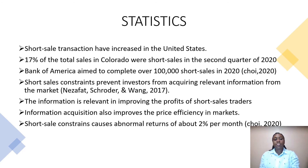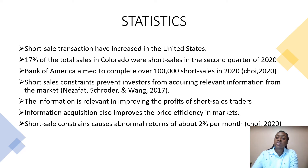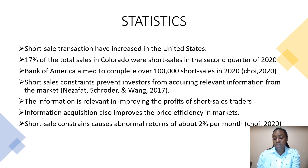Some statistics. Short-sell transactions have increased in the United States. 17% of total sales in Colorado were short-sells in the second quarter of 2020. Bank of America aimed over 100,000 short sales in 2020. Short-sell constraints prevent investors from acquiring relevant information from the market. The information is relevant in improving the profit of short-sell traders. Information acquisition also improves the price efficiency in the market. Short-sell constraints cause an abnormal return of about 2% every month.